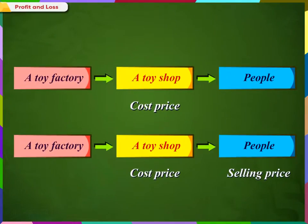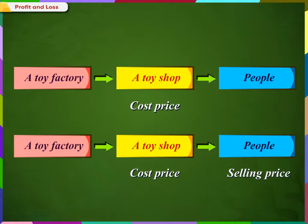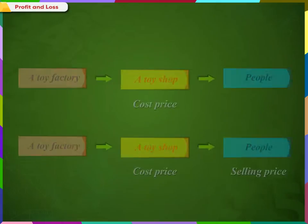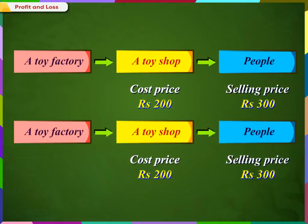The price with which the shopkeeper buys the toys from the producer is called the cost price, and the price with which the shopkeeper sells the toys to the customers is called the selling price. Let us assume that the shop buys a toy from the producer at Rs. 200 and sells it to the customers at Rs. 300. The shop has sold the toy at a higher price than the cost price. Therefore, it is a profit.